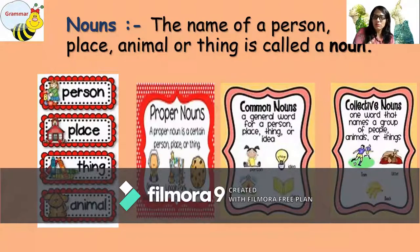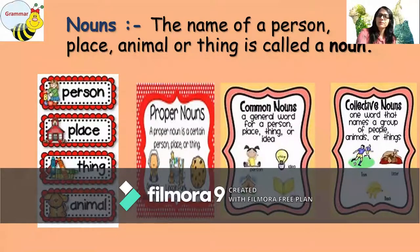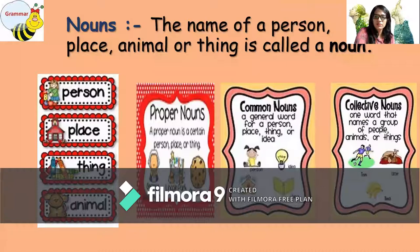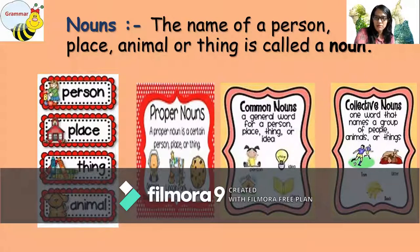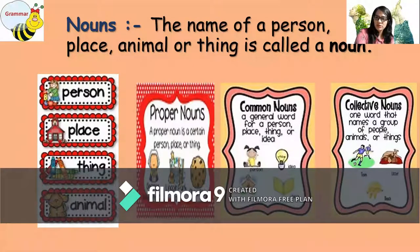These are the general names which we use for different people. For example, if there are 20 students and we say 'Good morning students, how are you?' we are referring to everybody. But if I say 'Good morning Rhea, how are you?' then I am talking about a specific girl, Rhea. So common names are the general words.